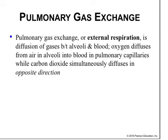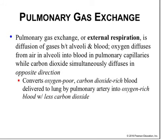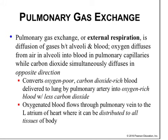Pulmonary gas exchange, also called external respiration, is the diffusion of gas between alveoli and blood. Oxygen diffuses from the air in the alveoli into the blood in the pulmonary capillaries while CO2 moves in the opposite direction. It converts oxygen-poor, carbon dioxide-rich blood delivered to the lungs by pulmonary arteries into oxygen-rich blood with less carbon dioxide. Oxygenated blood flows through the pulmonary vein to the left atrium of the heart where it can be distributed to all the body's tissues.